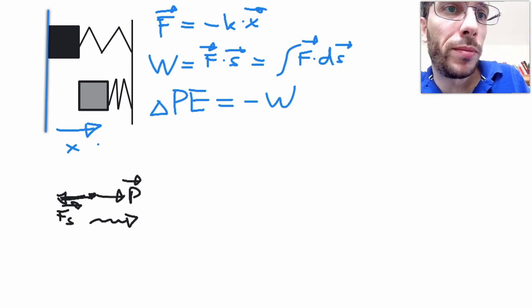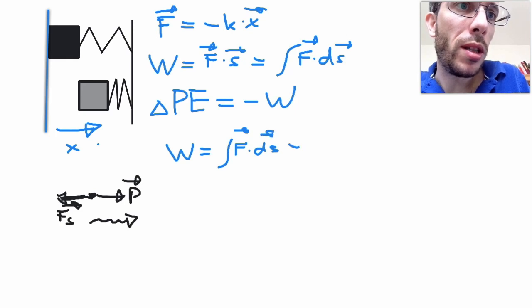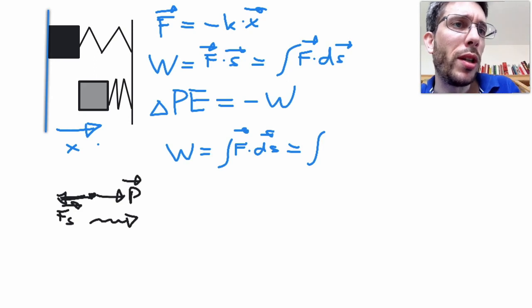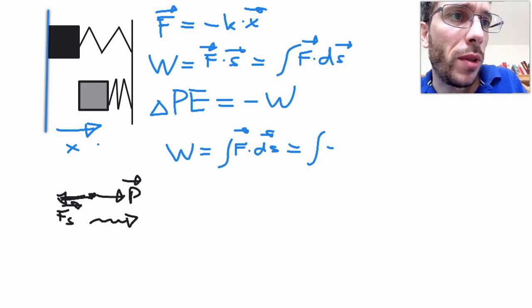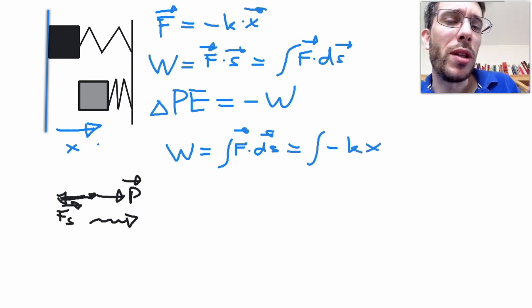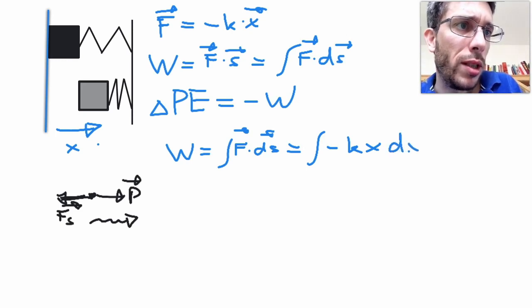So the work is equal to the integral of the force times the displacement. So in this situation, my force of the spring is pointing in negative direction. Let me sign here, minus kx. And my displacement is going to be the distance x to which we push it. So we're going in that direction, dx.